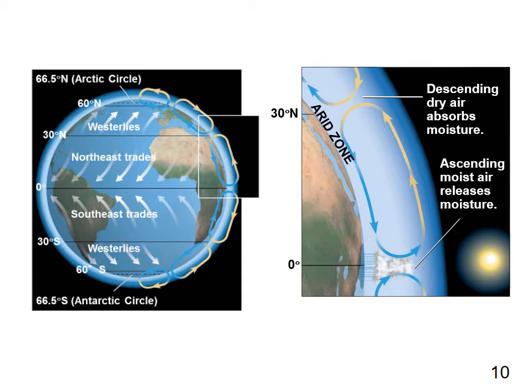Here's a diagram showing the pattern of trade winds and westerlies. Zooming in at the equator, you can see the warm, moist air ascending, releasing its moisture and causing rain, and then descending dry air absorbing moisture and causing those arid desert zones.